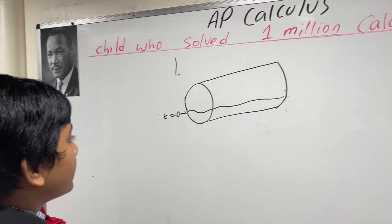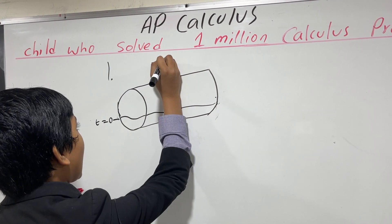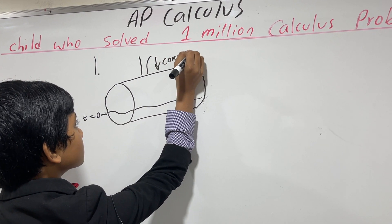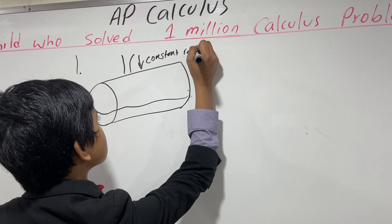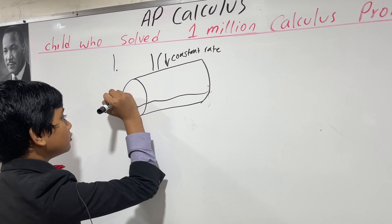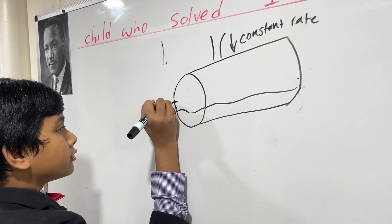And then water starts flowing in at a constant rate. Eventually, it gets to the halfway point of the circle, right around here, at t equals four.